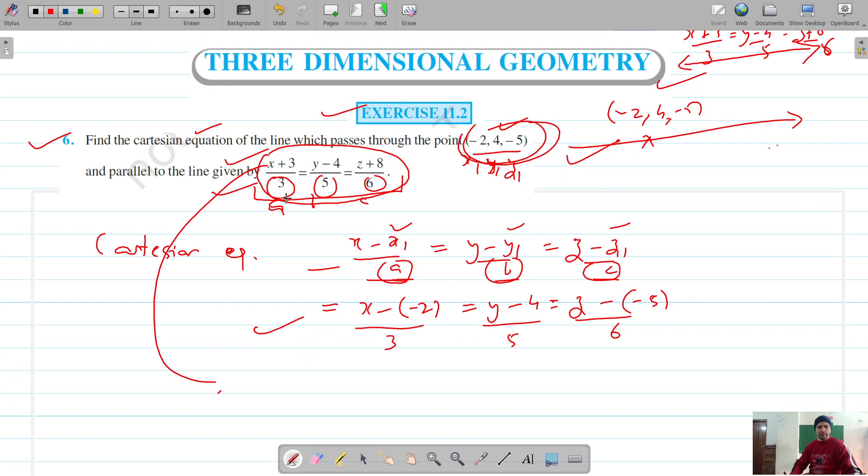These are our x1, y1, z1 and these are a, b and c from the Cartesian equation of the parallel line. This becomes x plus 2 by 3 equals y minus 4 by 5 equals z plus 5 by 6. That's our required Cartesian equation that passes through minus 2, 4, minus 5.